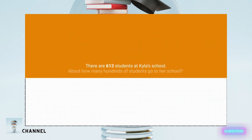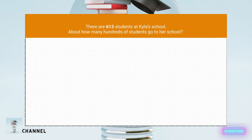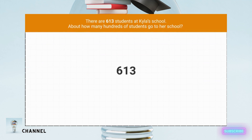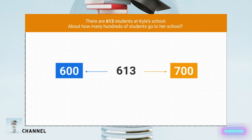There are 613 students at Kyla's school. About how many hundreds of students go to her school? The problem tells us that there are 613 students at her school, so we'll focus on that number. Then it asks about how many hundreds of students. This tells us we're rounding to the nearest hundred. We're trying to figure out if 613 is closer to 600 or 700.